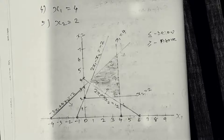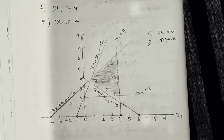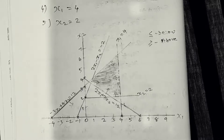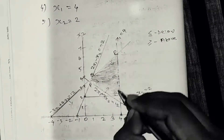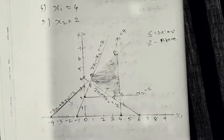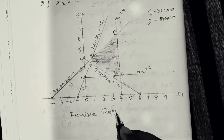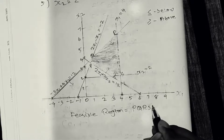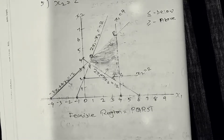As per the criteria, we mark the feasible region. In the next stage, we identify the corner points of the feasible region and label them P, Q, R, S, and T. We will mark the value of x1 and x2 at each of these corner points.